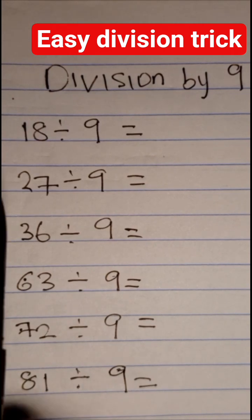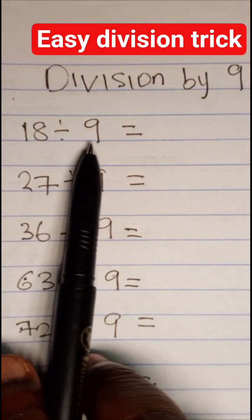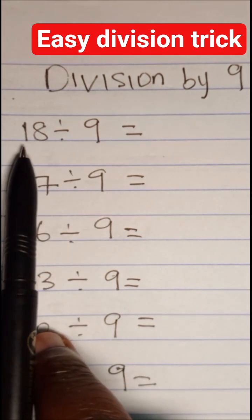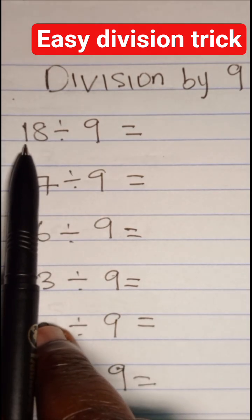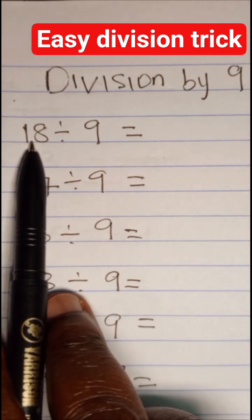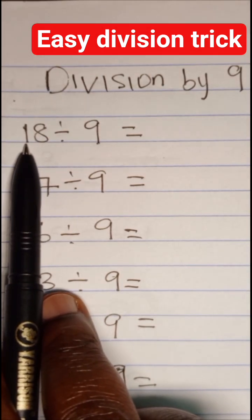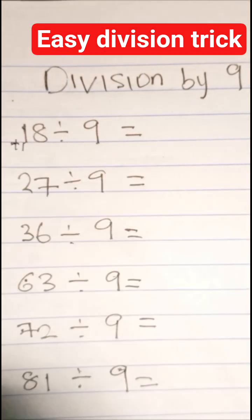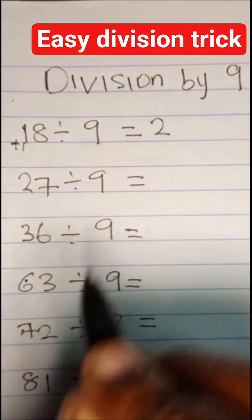So all we need to do for the first one, we have 18 divided by nine. It's very easy. We are going to consider the first numbers for here. The first one is one. Here, the first one is two. So all we need to do is to add one to the first digit number. That is one plus one. That will give us two. That's our answer.